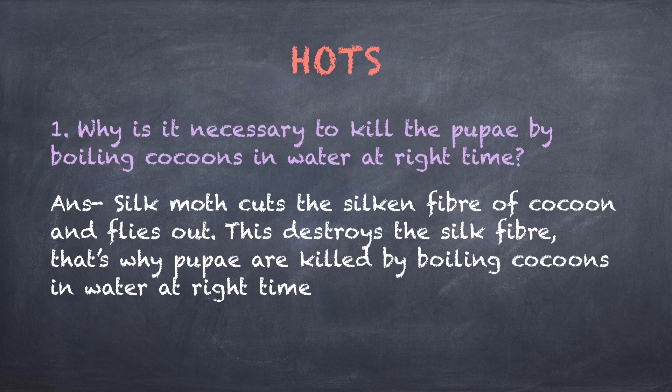Now let's come to HOTS. Question number one: Why is it necessary to kill the pupae by boiling the cocoon in water at the right time? Answer: Silk moth cuts the silken fiber of the cocoon and flies out when it gets matured, which destroys the silk fiber. That is why pupae are killed by boiling the cocoon in water at the right time.